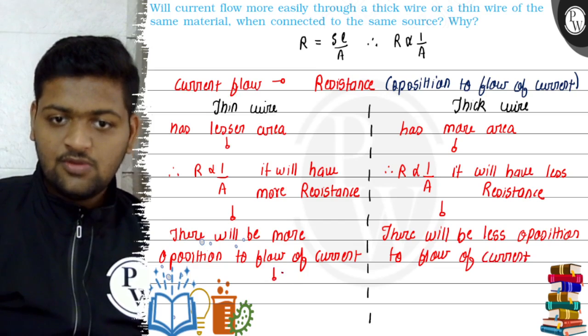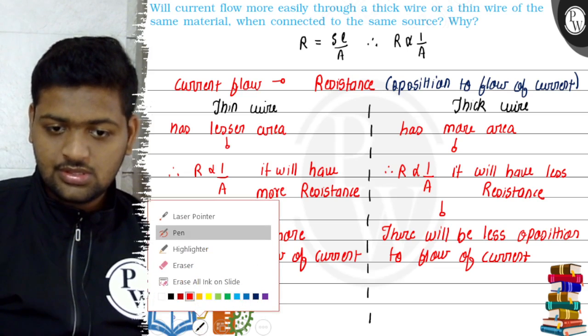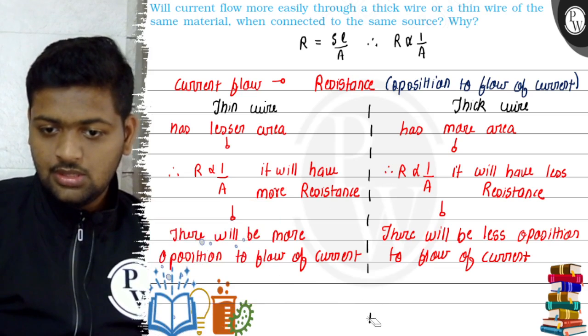Hence current will not flow easily. Since there is less opposition to current in the thick wire.